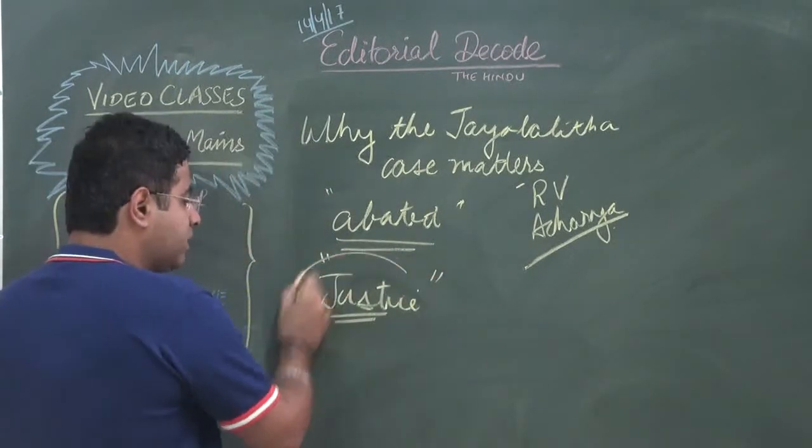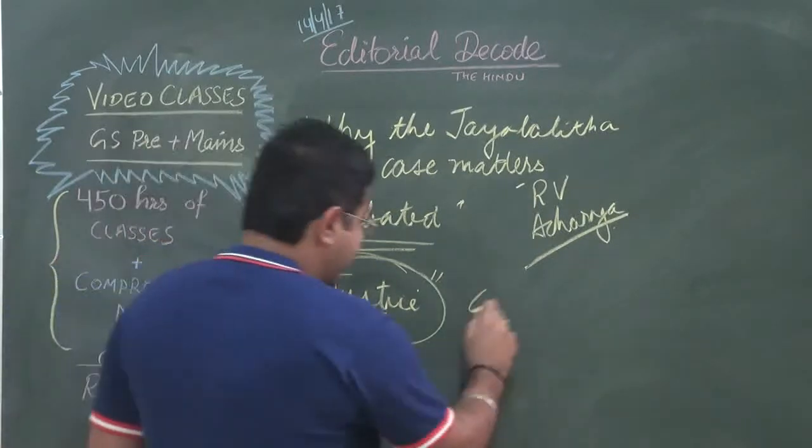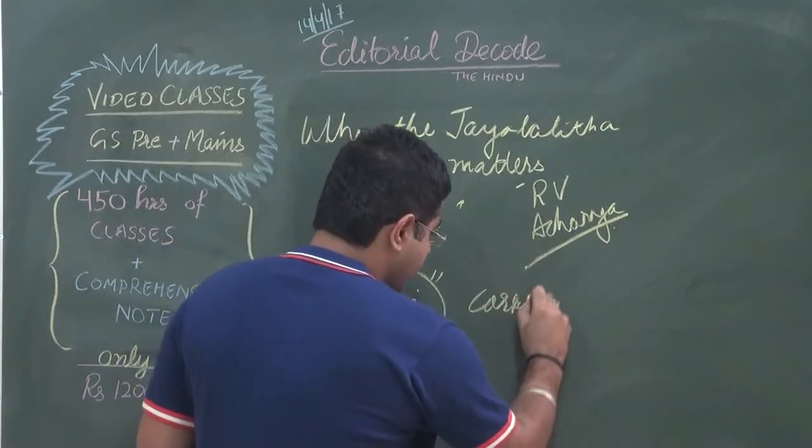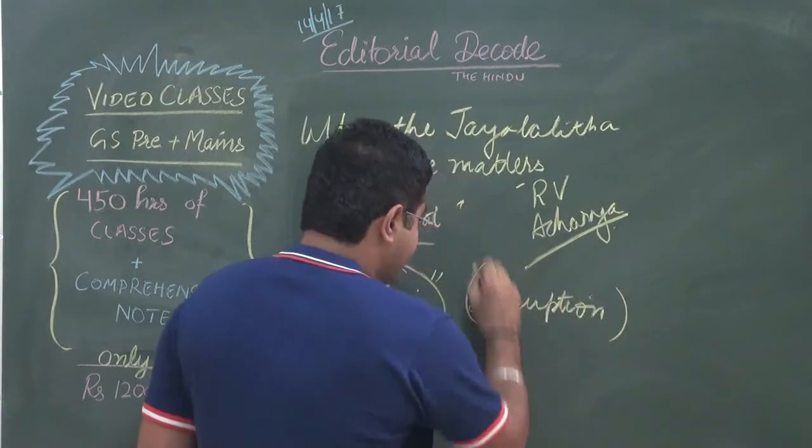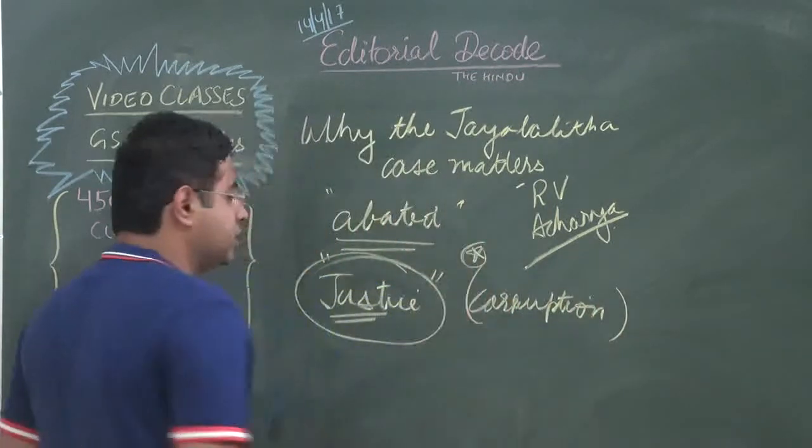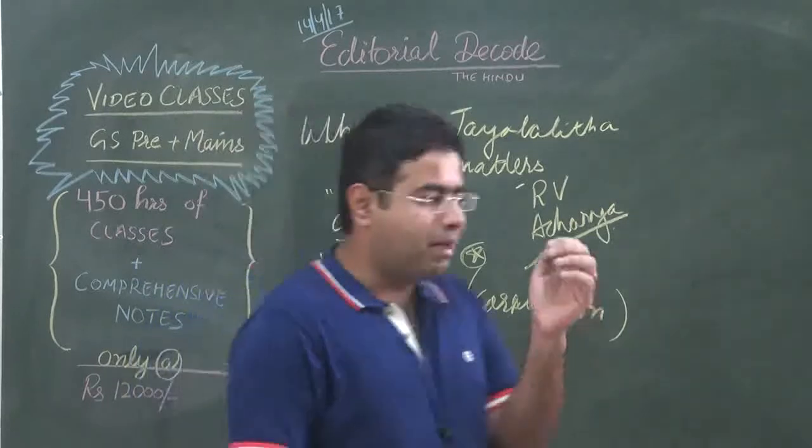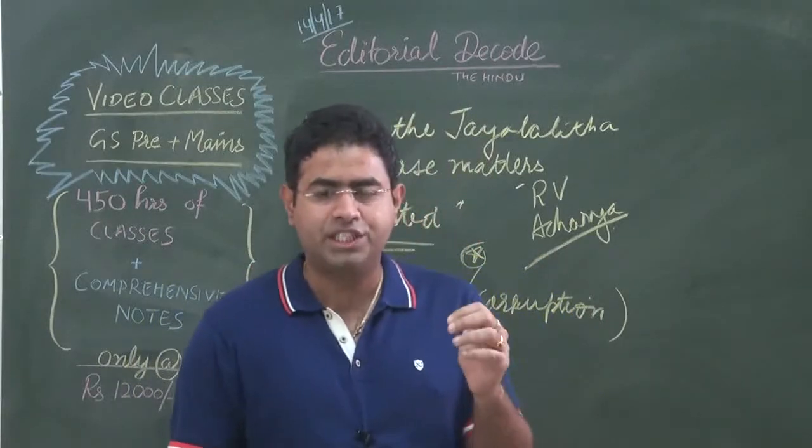This entire editorial revolves around the issue of justice and corruption. When it comes to corruption and taming of corruption, it is the duty of the judiciary that it must set up good precedents.